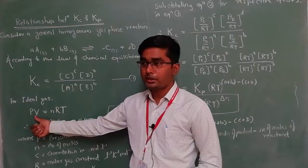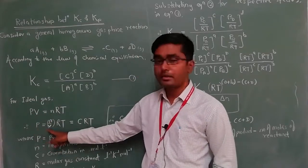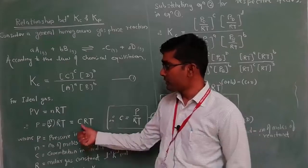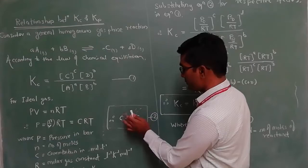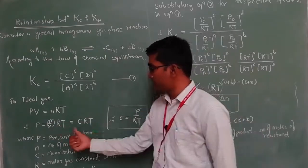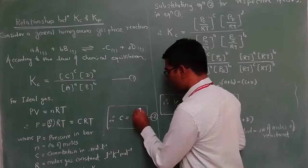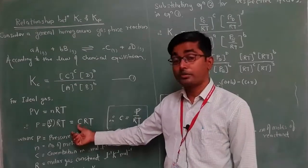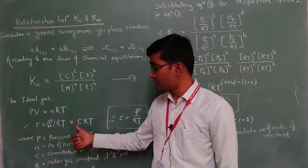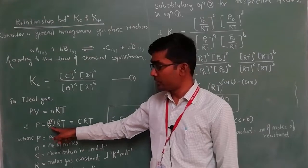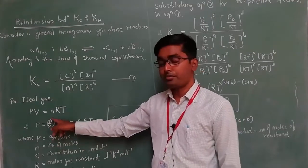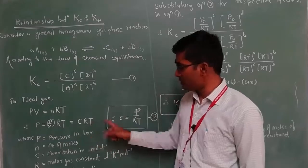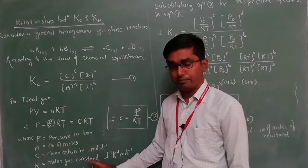Rearranging the ideal gas equation — taking volume to the right-hand side — we get P = (n/V)·RT. Here, n/V is called the concentration, so C = n/V. Therefore, C = P/(RT). Concentration means the number of moles of solute dissolved in a given volume of solution. So n/V is the concentration, and we write C = P/(RT). This is Equation 2.